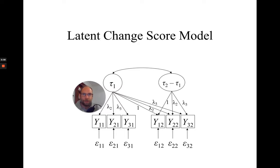In the description for this video, you also find links to my previous videos on latent change score models. So if you haven't seen those yet, I suggest that you begin with these previous videos, especially if you're not so familiar with latent change score models yet. In this video, I'm going to focus on Mplus output for the latent change score model. I also have a video in which I discuss the Mplus syntax — the input file for specifying such a model — so please check out that other video first if you're not familiar with the Mplus specification yet.